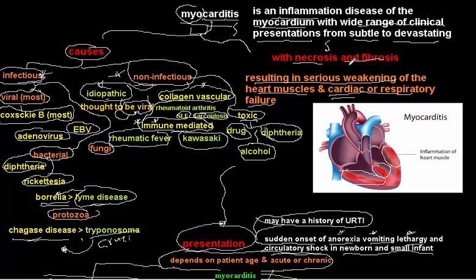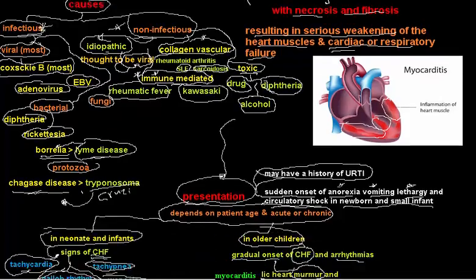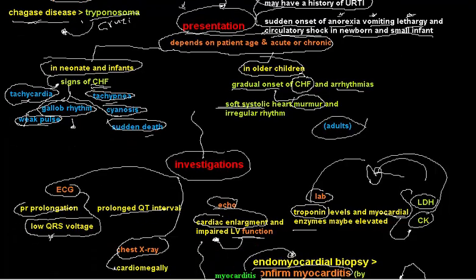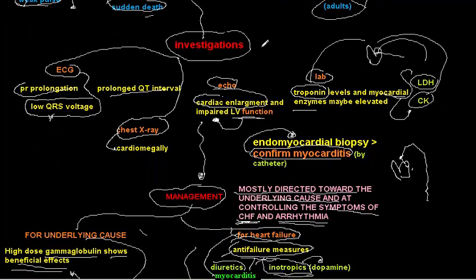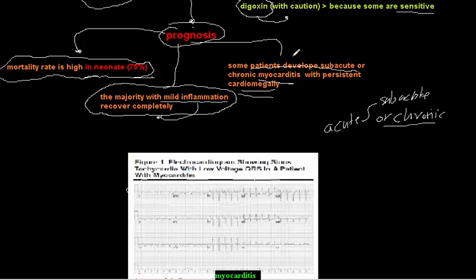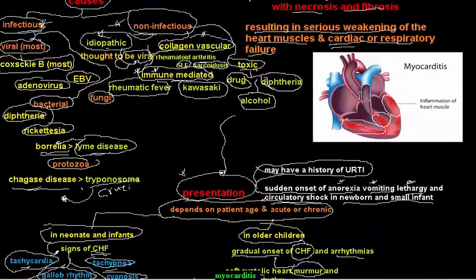In summary: myocarditis is inflammation of the myocardium with infectious and non-infectious causes. Patients present with heart failure symptoms or general non-specific symptoms. Investigations include ECG, chest X-ray, echocardiogram, myocardial enzymes, with endomyocardial biopsy as confirmative. Management targets heart failure and the underlying cause. Prognosis in neonates is very bad with 75% mortality; most with mild disease recover, but some progress to chronic myocarditis with cardiomegaly.